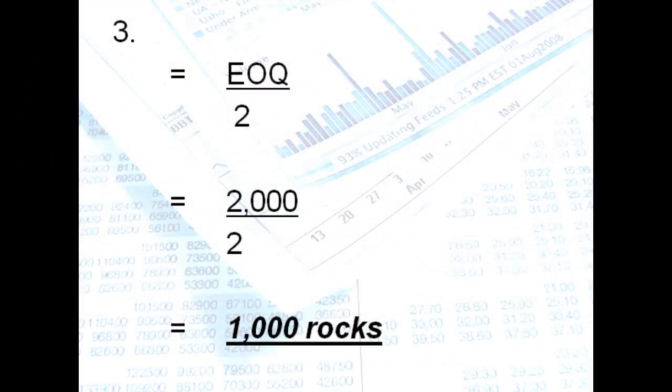So our annual demand is 40,000 units divided by 2,000. So we arrive 20 orders in one year. Question number three, how much inventory should we maintain? That is EOQ divided by 2. So that's 2,000 rocks divided by 2. So we arrive at 1,000 rocks.